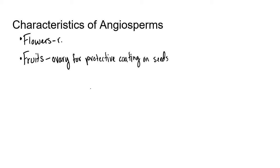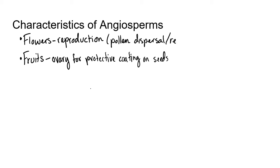So flowers are for reproduction — that's pollen dispersal and pollen receival. So we have flowers, and we have fruits. What else do we have? We have this weird process called double fertilization.